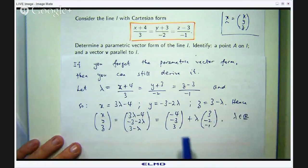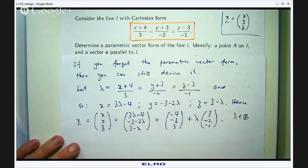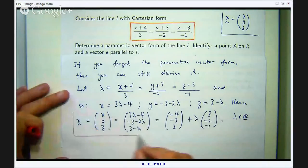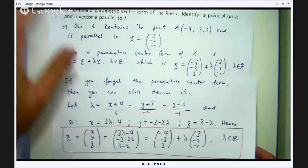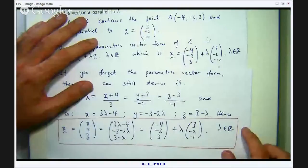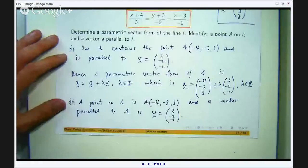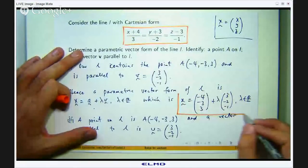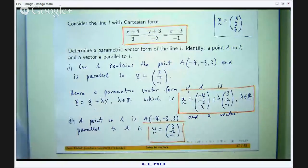If I take out the constant terms I get one vector, and if I pull out a lambda I get the direction vector. Alright, so that is the parametric vector form. Let us compare it with what we had on the other page — are they the same? Yes, they are the same. They do not need to be the same because there is an infinite number of ways to parameterize a line. So there are a few ways of doing that problem.